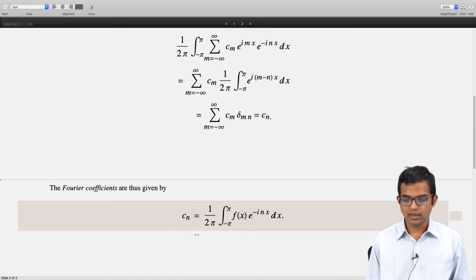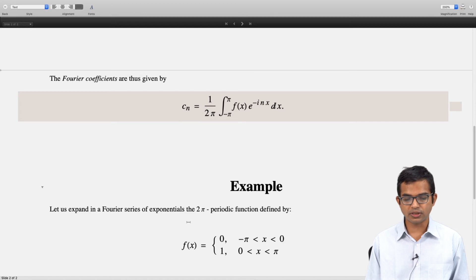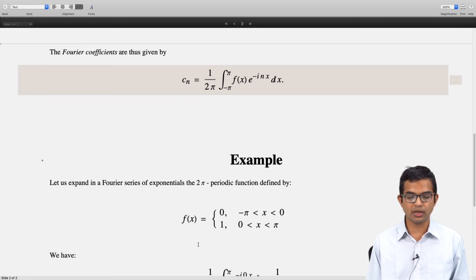If you do this in the sine-cosine Fourier series, you will anyway get back the same result. Let us look at an example—the same example which we have already seen but using this prescription. Let us expand in a Fourier series with complex exponentials this 2π periodic function: f(x) equals 0 in the interval -π to 0 and 1 in the interval 0 to π.